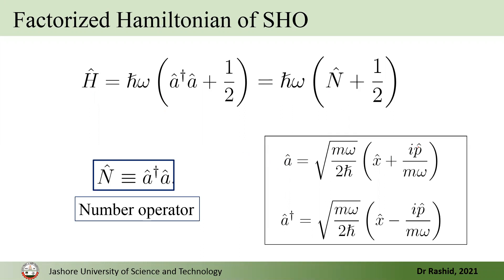We know that p-hat equals iℏ d/dx, so we have -iℏ d/dx. So A is a real operator, and A-dagger is also a real operator. Though A and A-dagger don't give any physical quantity or represent any physical parameter like momentum, they are real-valued operators.